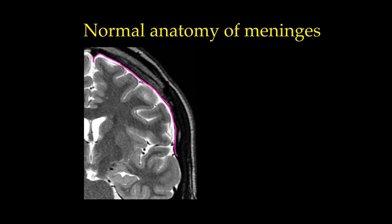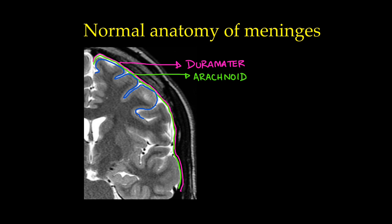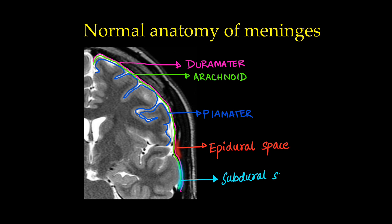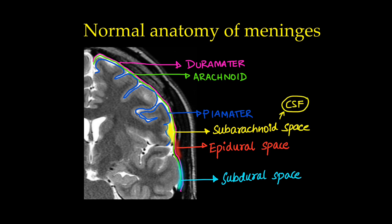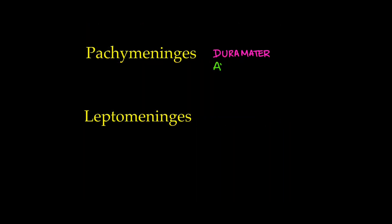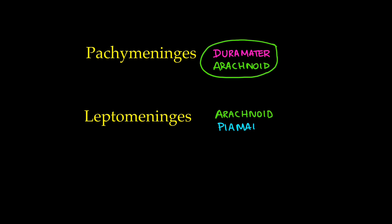The meninges contain three layers. The outermost layer is the dura mater. Underneath the dura mater, almost adherent to it, we have the arachnoid with a thin space in between. Next, we have the pia mater which adheres to the sulci and gyri. Above the dura mater, we have the epidural space; between the dura mater and arachnoid, the subdural space; and beneath the arachnoid, the subarachnoid space which contains the flowing CSF. Pachymeninges is a collective term for dura mater plus arachnoid, and leptomeninges refers to arachnoid plus pia mater.